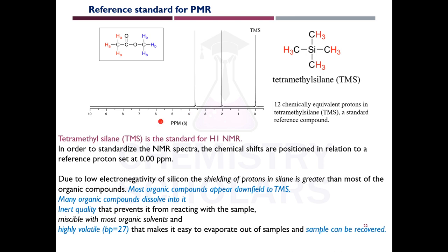The signal obtained by TMS is always considered as 0 ppm, and all signals of proton NMR are considered above this 0 ppm. Even when two groups are both CH3, they can appear at different positions in the spectrum — which we study under the concept of chemical shifts. TMS is the standard reference used for PMR/NMR, taken as 0.00 ppm on the extreme right of the spectrum.